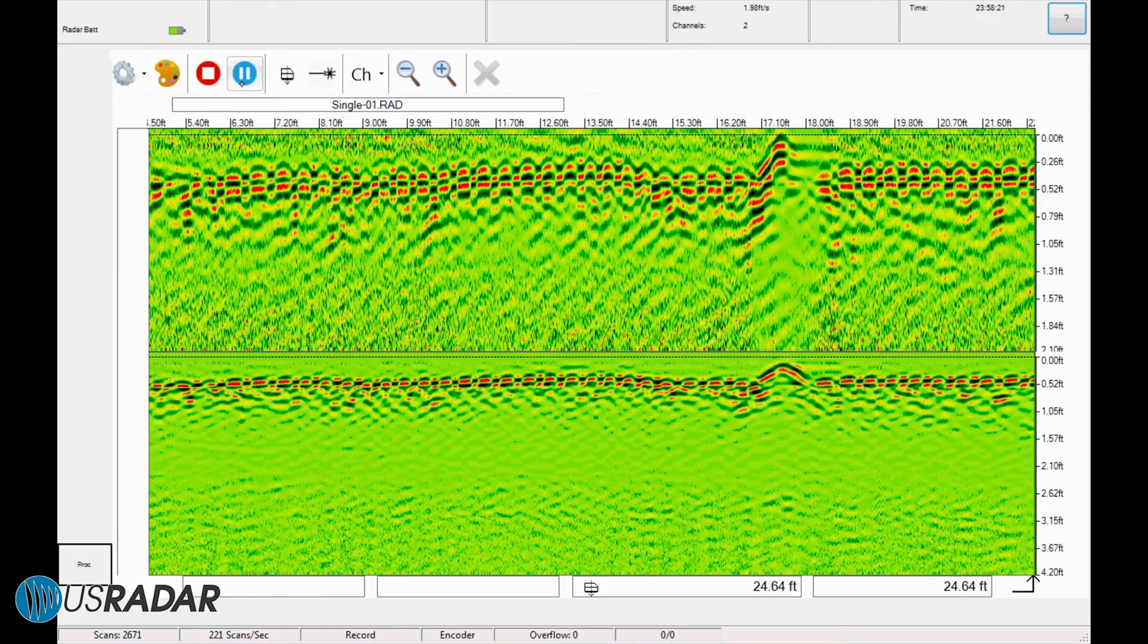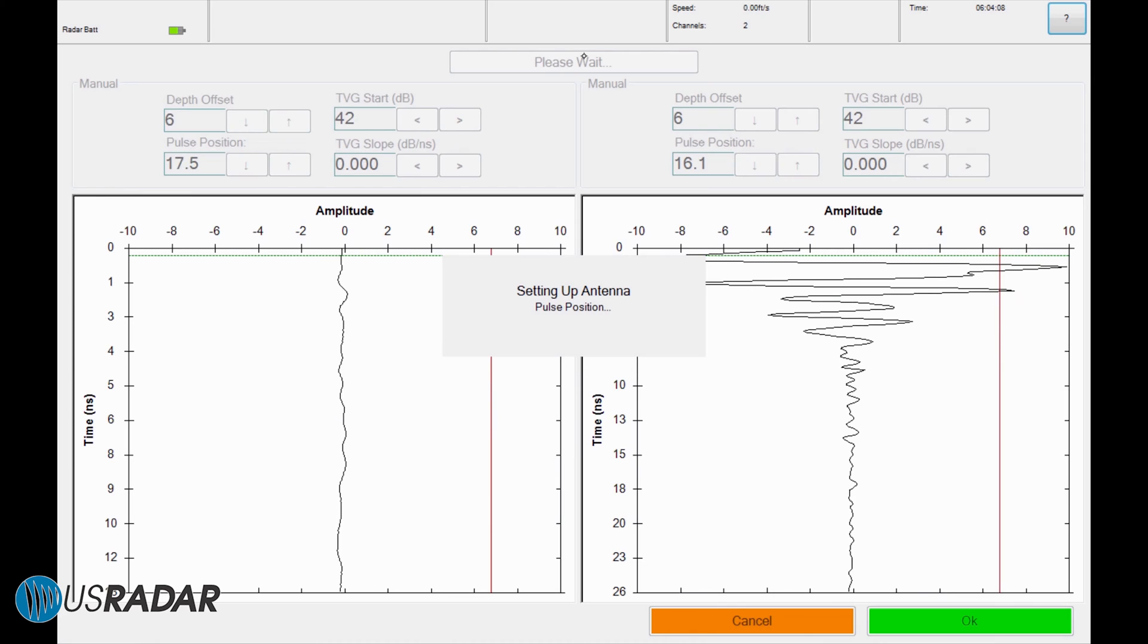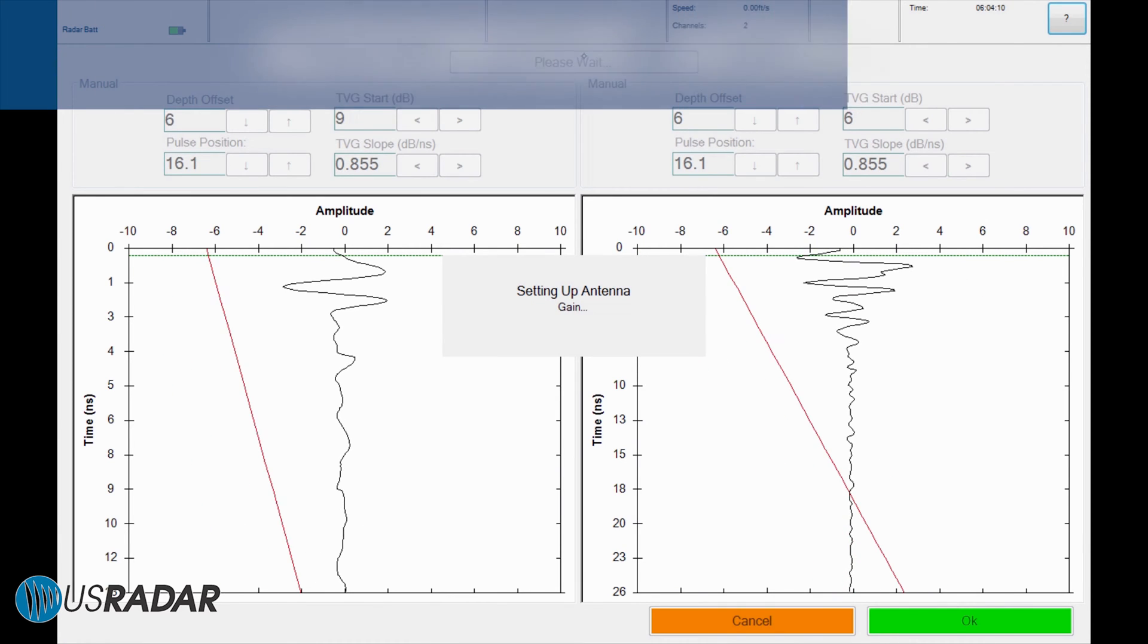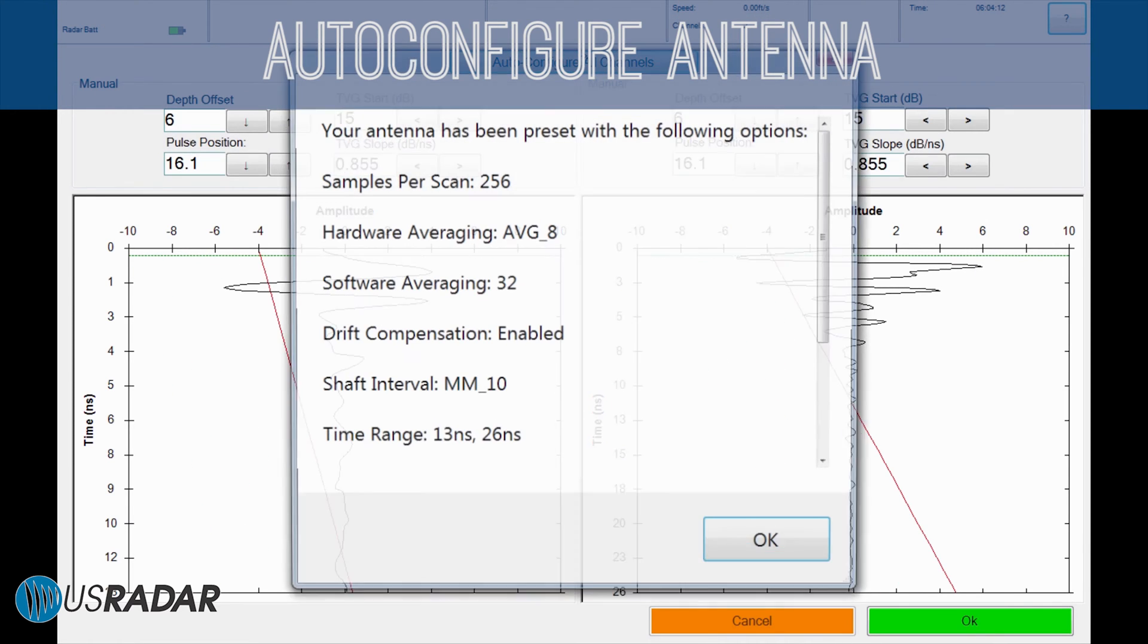With U.S. Radar's proprietary acquisition software, users can auto-configure antenna settings to the material layers it is scanning.